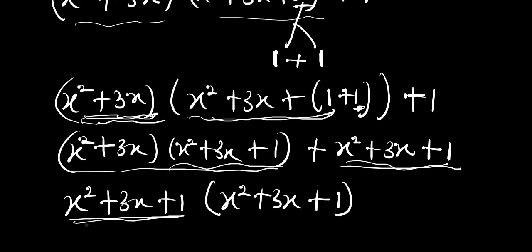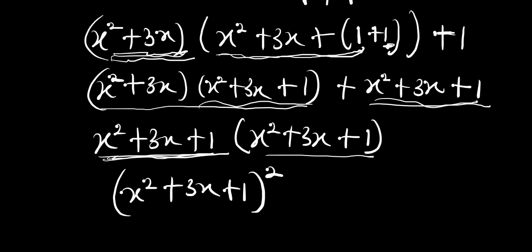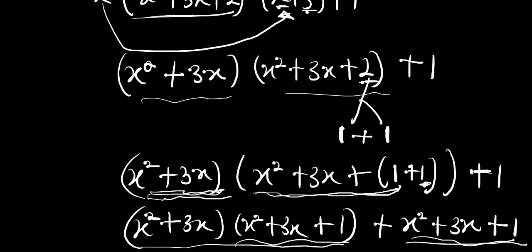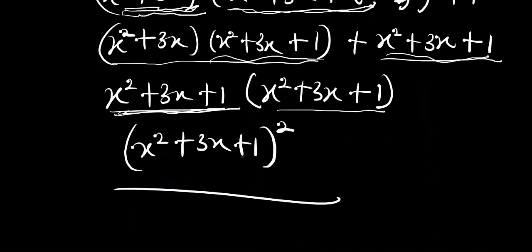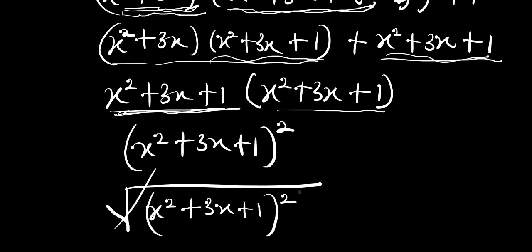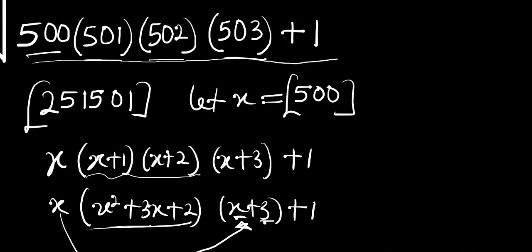Look at what we have — (x squared plus 3x plus 1) squared. Getting back to the original problem, there is a square root around the whole expression. The square root cancels the square, and we are simply left with x squared plus 3x plus 1.